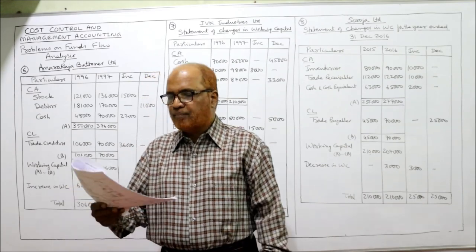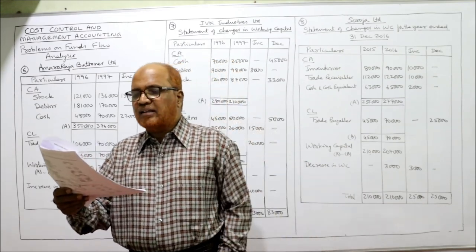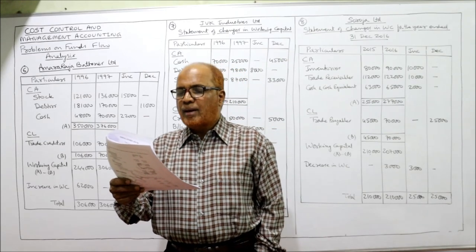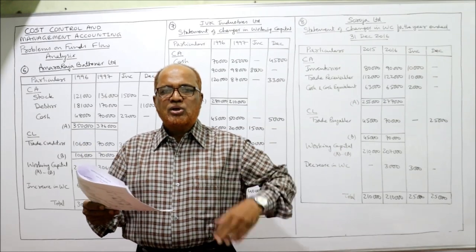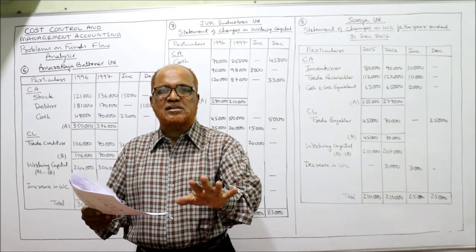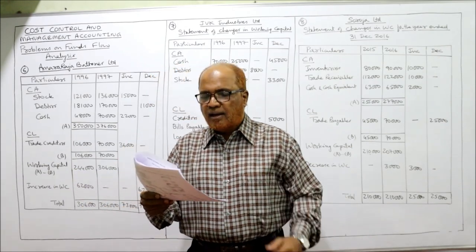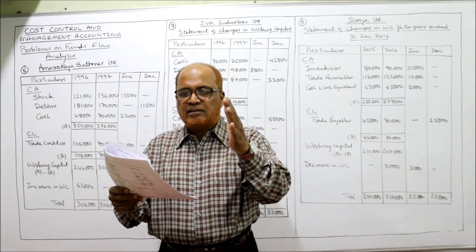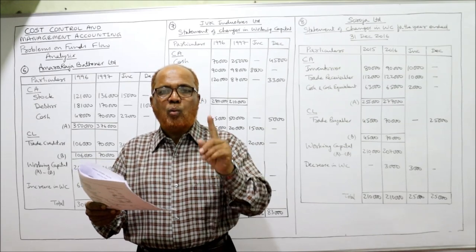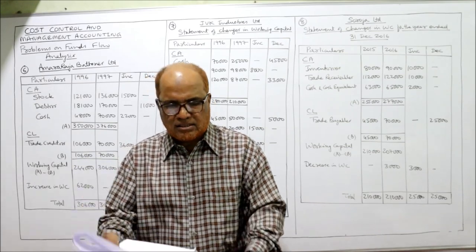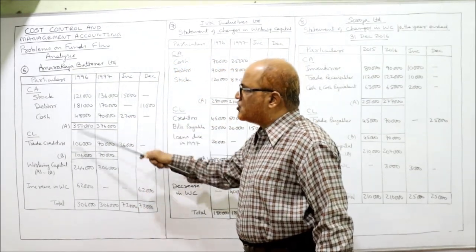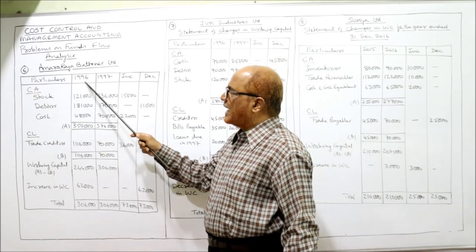In problem 6, we look at the particulars of Amara Raja Batteries Limited. On the asset side, stock, debtors, and cash are the three current assets we will take. Machinery will not be taken. On the liability side, only trade creditors will be taken as the current liability. So we have one current liability and three current assets.